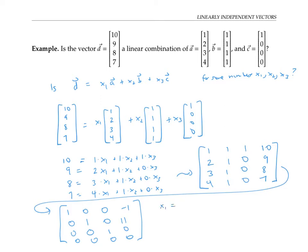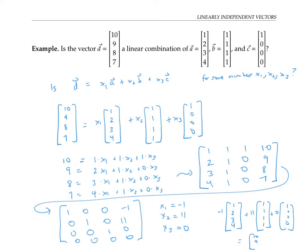The solution is x1 equals negative one, x2 equals 11, and x3 equals zero. As a check, negative one times vector a plus 11 times vector b plus zero times vector c gives us the vector 10, 9, 8, 7. So d is indeed a linear combination of a, b, and c. In fact, we didn't even need c — the coefficient of c ended up being zero.